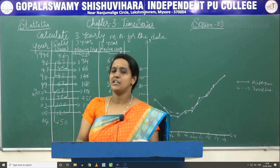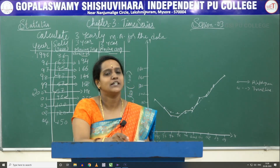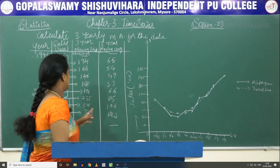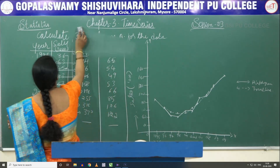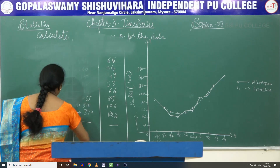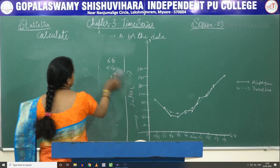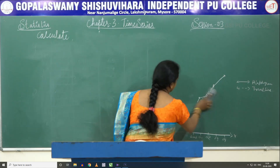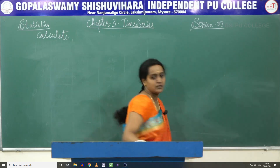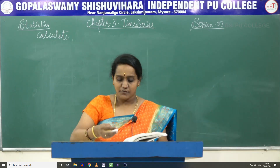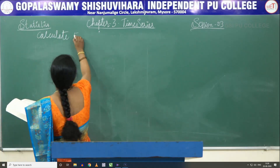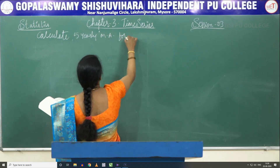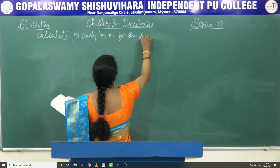In the examination, they will not ask for the graph because if they ask for the graph it would be 10 marks, so no need to plot the graph. Next problem: we have to find the five-yearly moving average for the following data.